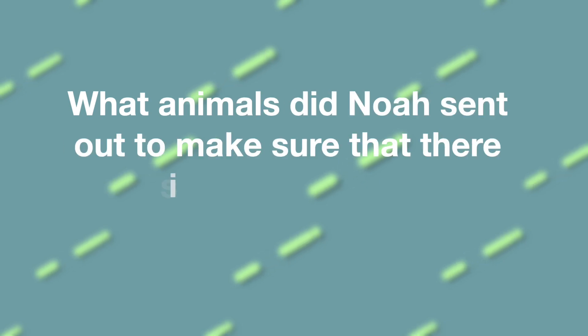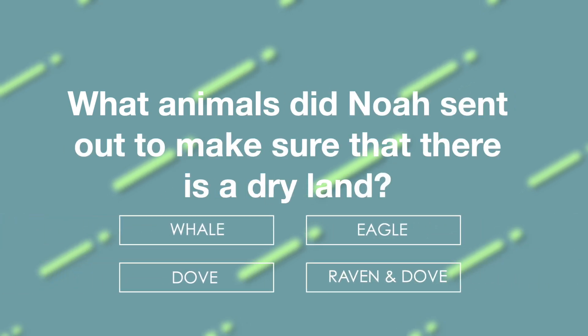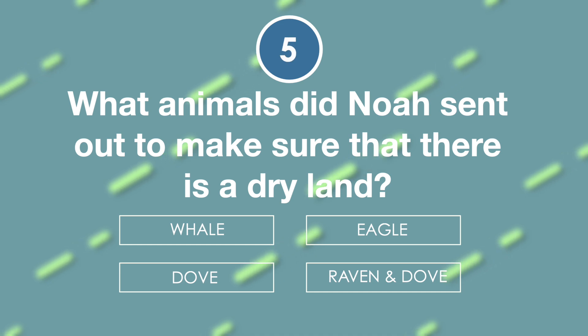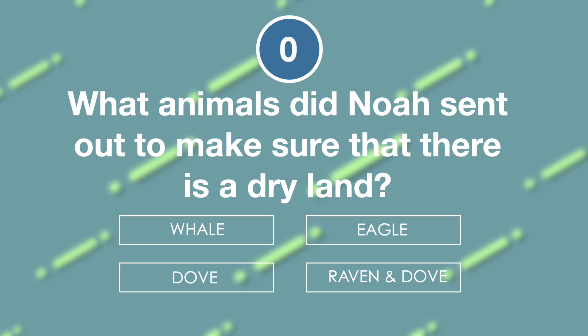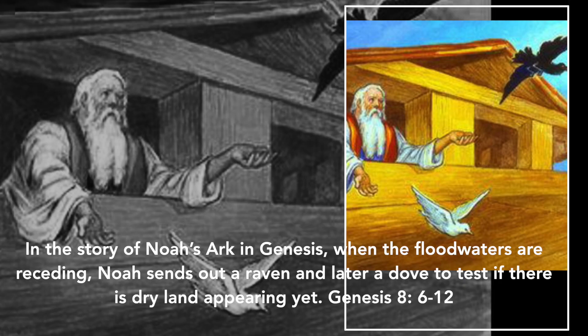What animals did Noah send out to make sure that there was dry land? Is it whale, eagle, dove, or raven and dove? The answer is raven and dove. In the story of Noah's ark in Genesis, when the floodwaters were receding, Noah sends out a raven and later a dove to test if dry land was appearing yet. Genesis 8 verses 6 to 12.